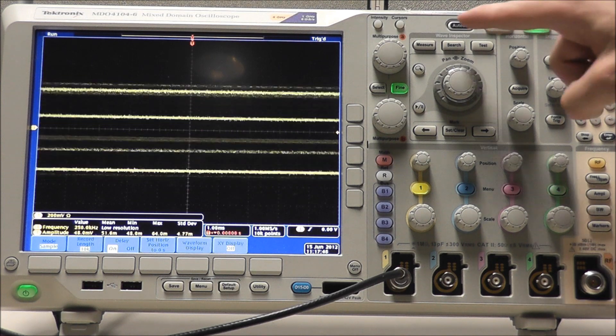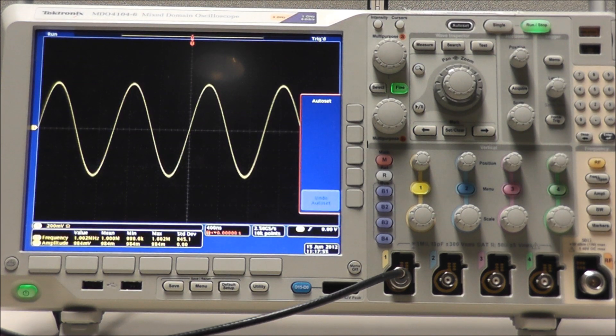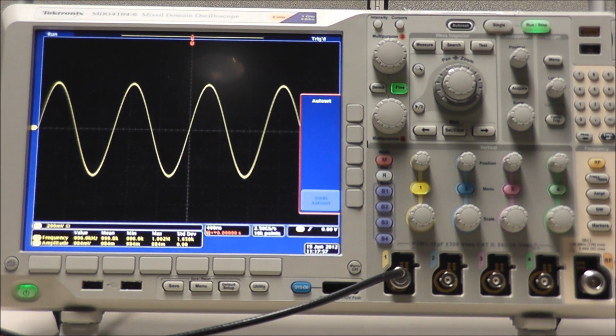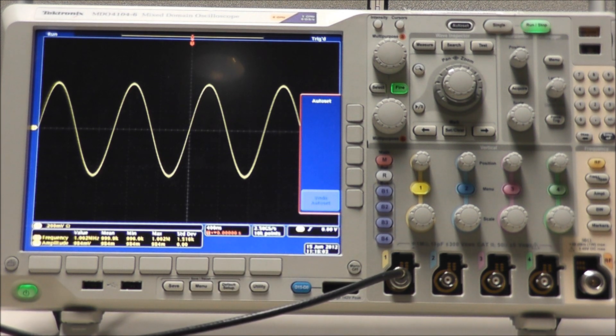The quick fix for aliasing is to select autoset, which will automatically set the vertical, horizontal, and trigger controls for a usable and stable waveform display. You can see in the bottom left corner, our measurements are almost exactly the desirable one megahertz frequency and one volt amplitude.